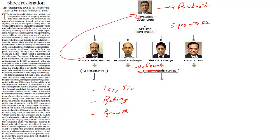What does the government have to do? The conclusion we have to understand is that the government should take this as an example and should not treat the RBI as any other government department. You can have the bureaucracy, you can have committed bureaucracy that says yes to your approach. But the government has to understand that RBI is not any other department and the governor is not a bureaucrat. It has to give its independence, its autonomy, and make sure that RBI is given that operational autonomy so that they are able to function efficiently, keeping the prospects of the Indian economy in mind and not in the guise of a political party.